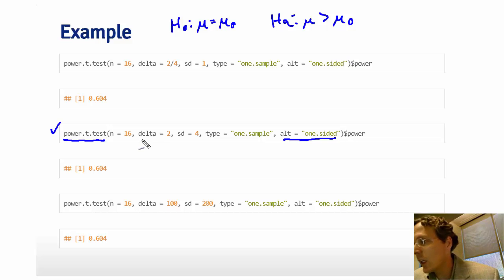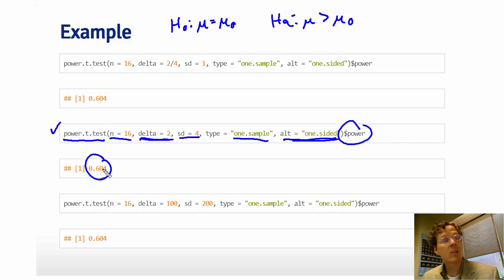So delta here, this parameter, is the difference in the means. So if I specify n, I specify how different mu-a is from mu-naught, and I give it a standard deviation of 4, I'm telling it it's a one-sample t-test, and I want one-sided power, and then I'm grabbing the power part of it, then it gives me my power, 60%.